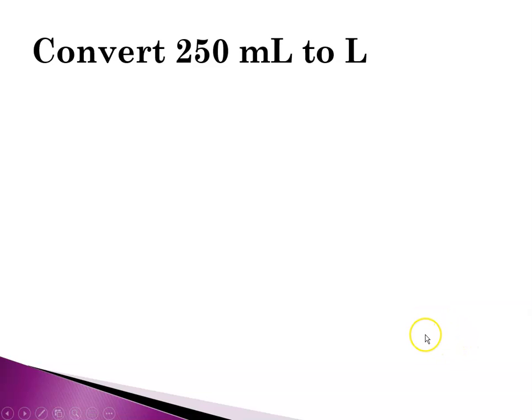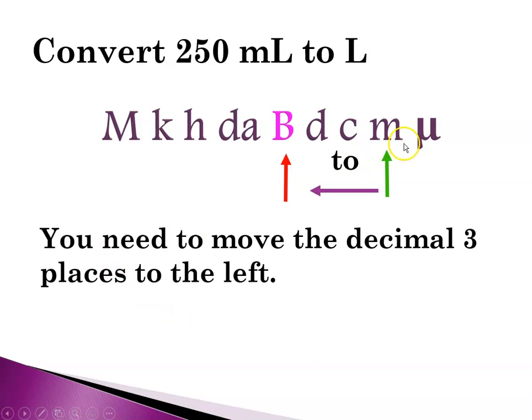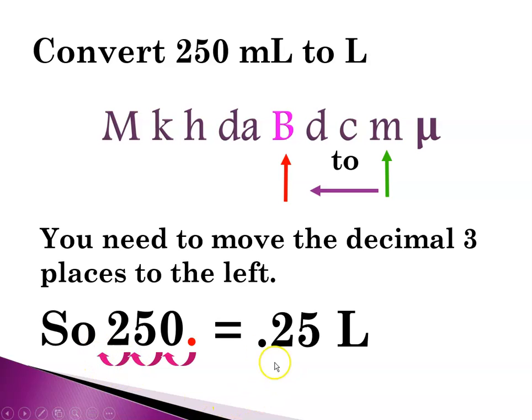Let's try converting 250 milliliters to liters. I'm going from milliliters to liters, which is the base. I'm moving to the left, so I need to move my decimal one, two, three places to the left. Starting with 250, I bounce the decimal one, two, three places, which gives me 0.25 liters. Notice the trailing zero in the original measurement was not significant, so there were only two significant digits. In my answer, I have to be careful to only keep two significant digits.